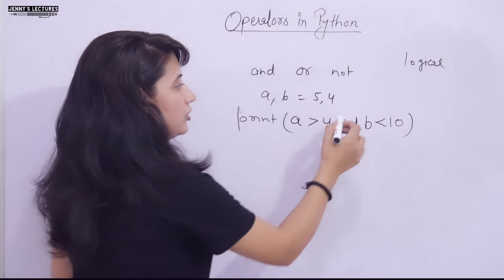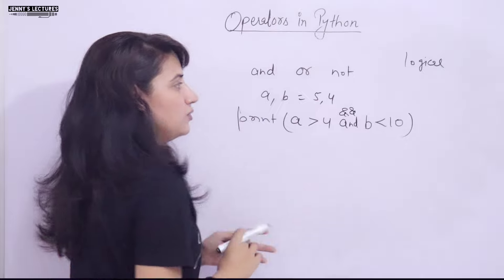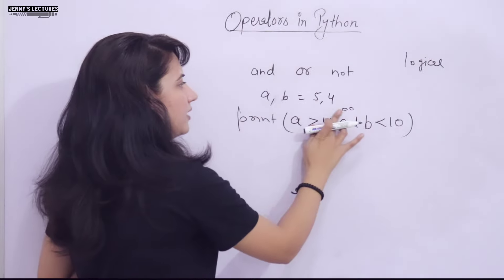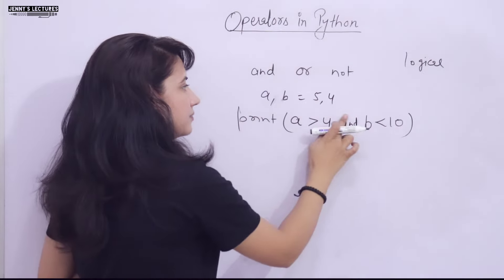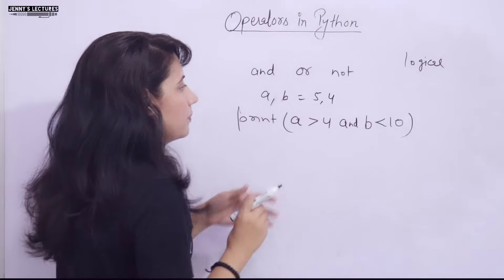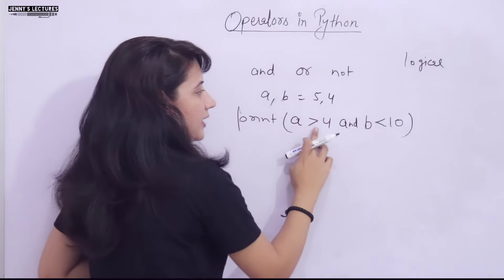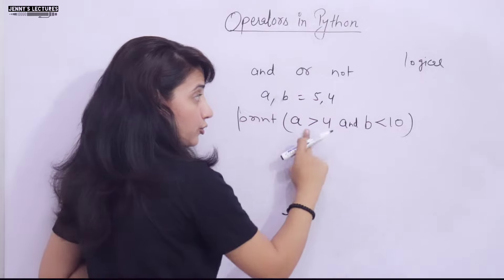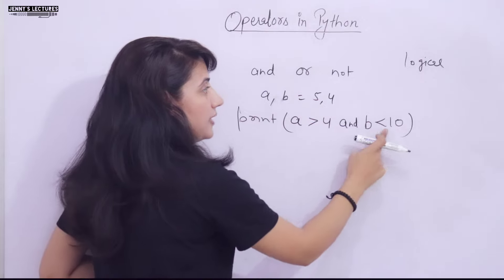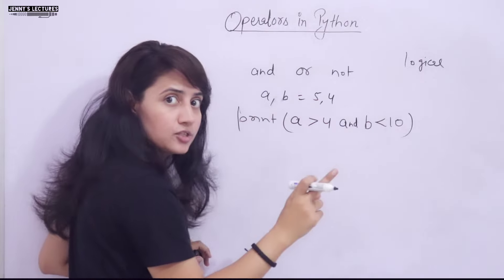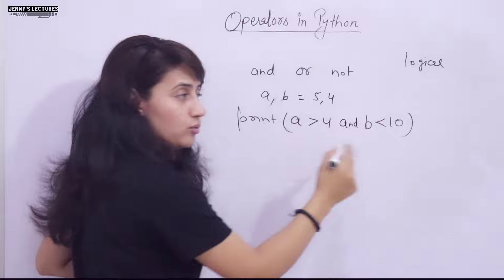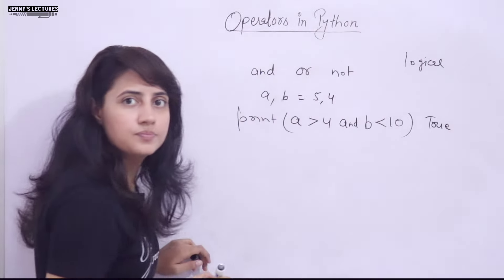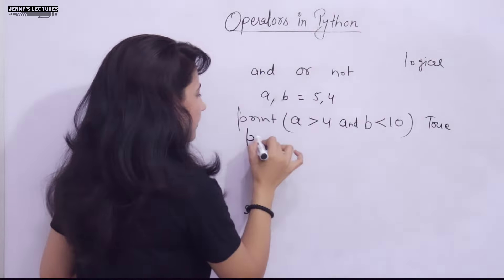Note that in Python we don't use symbols like in C or C++. We simply write 'and'. So here, a > 4: a is 5, yes, that is True. And b < 10: b is 4, yes, that is also True. Both are True so it will give you True.